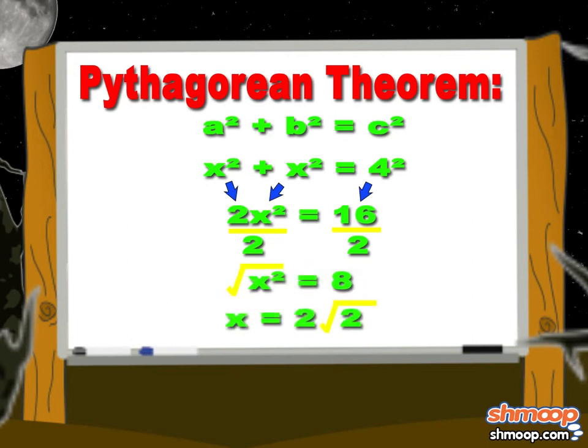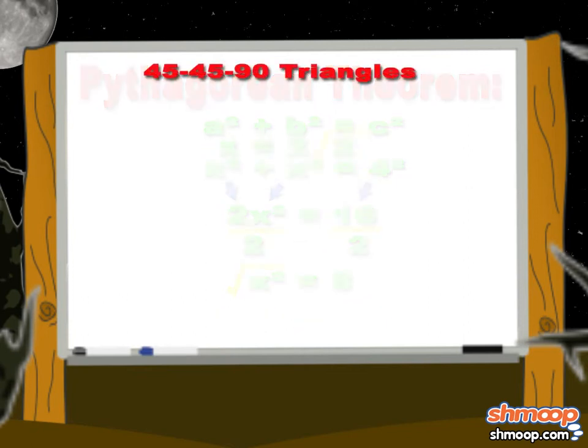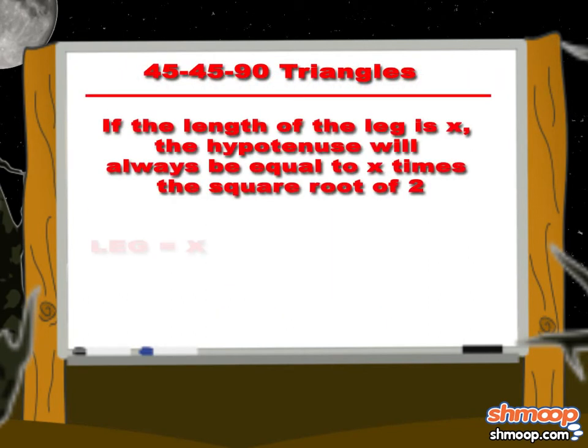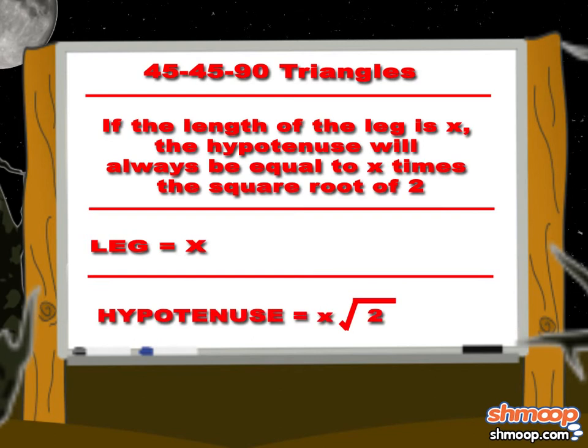That's the wonderful thing about 45-45-90 triangles. If the length of the leg is X, the hypotenuse will always be equal to X times the square root of 2.